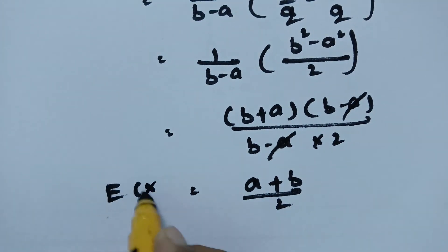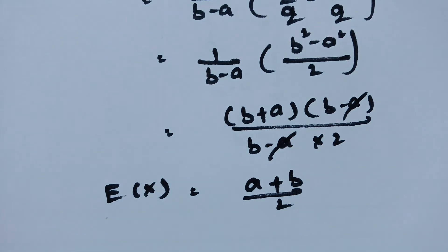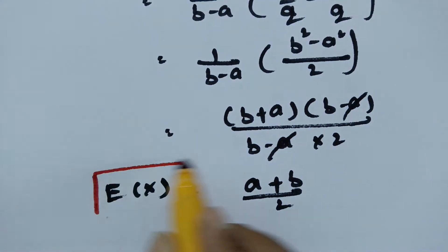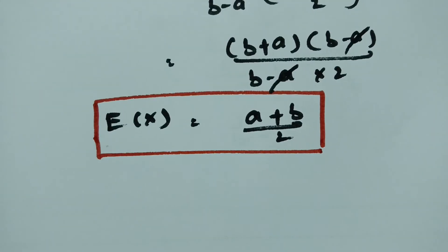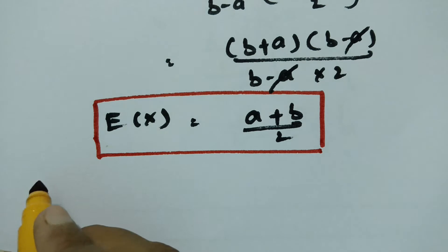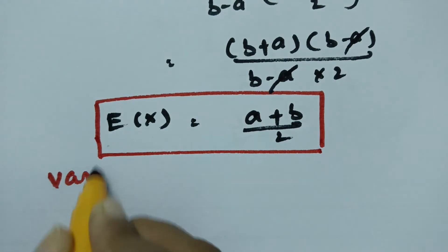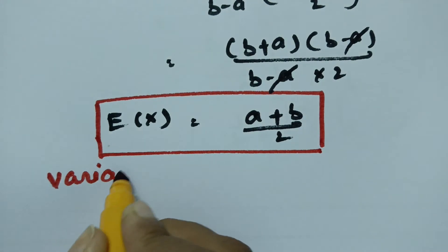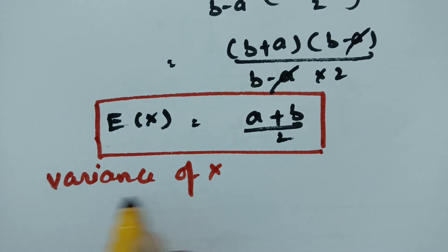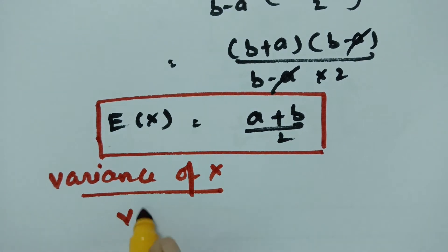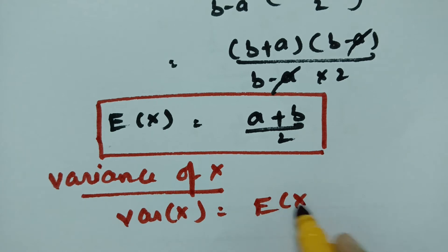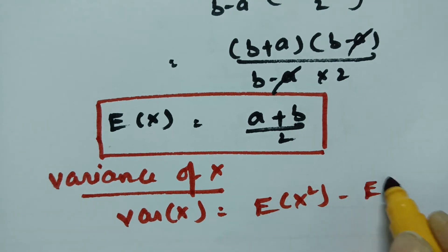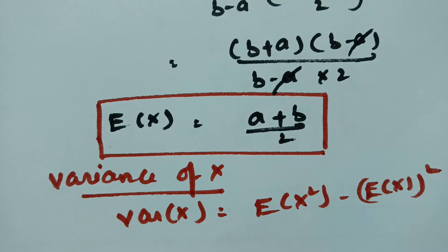So E(x) = (a + b)/2 is the mean of the uniform distribution. Next, we find the variance of x. The variance formula is: Var(x) = E(x²) − [E(x)]².